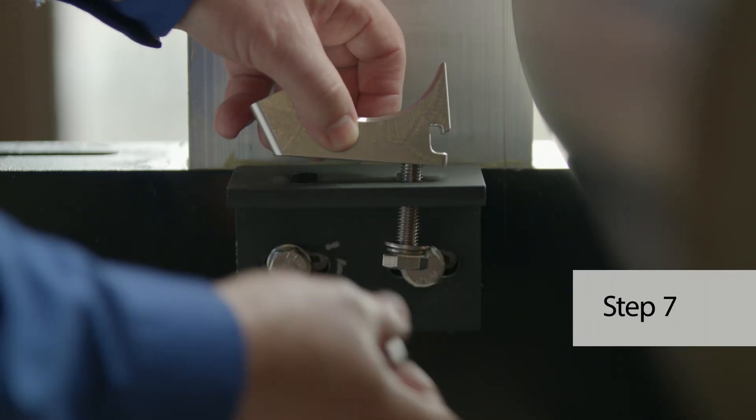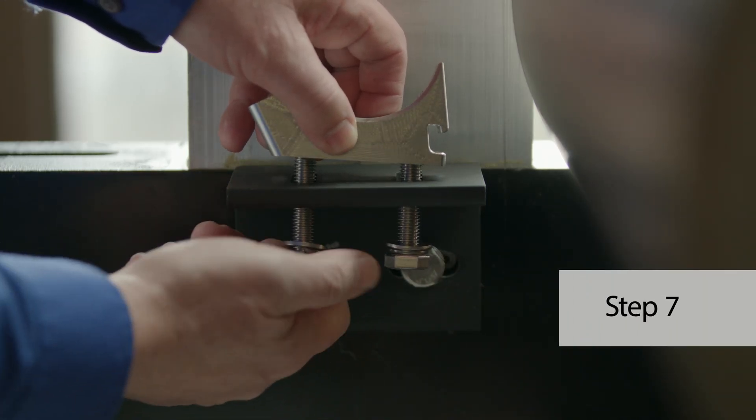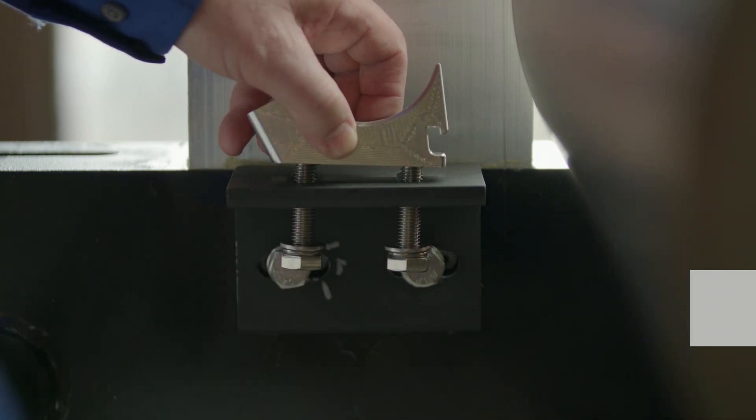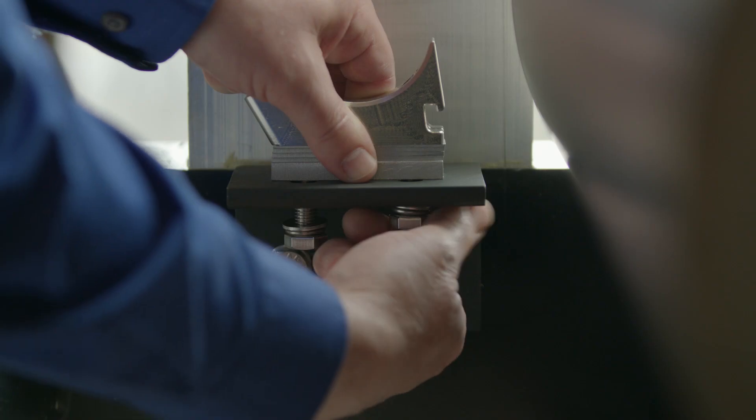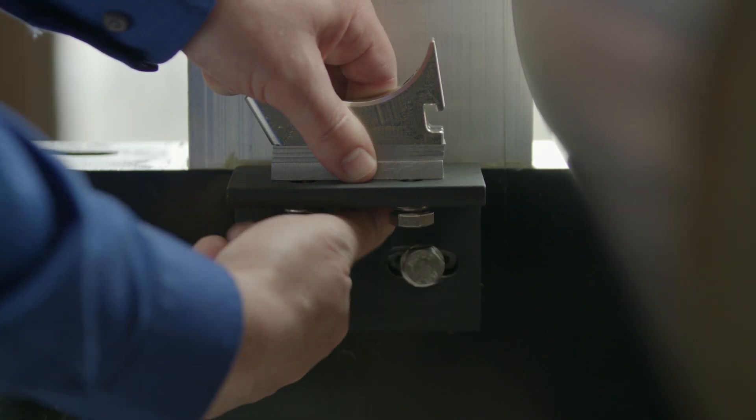Step seven, mount the bearing clamps onto the brackets using the supplied fasteners. I'm using the supplied shims under the bearing clamps. Only hand tighten the fasteners during this step.